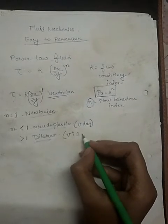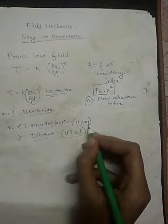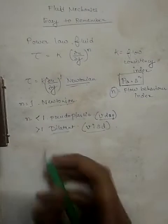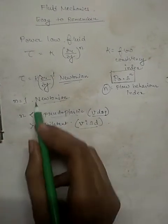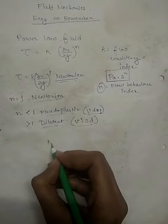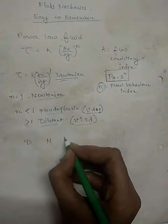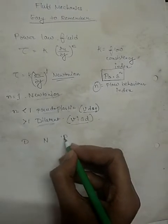How do you remember it easily? So this is my secret formula to remember this. Now you see, let's see how we can remember this stuff easily. So Newtonian BN, dilatant BD and pseudoplastic BP.